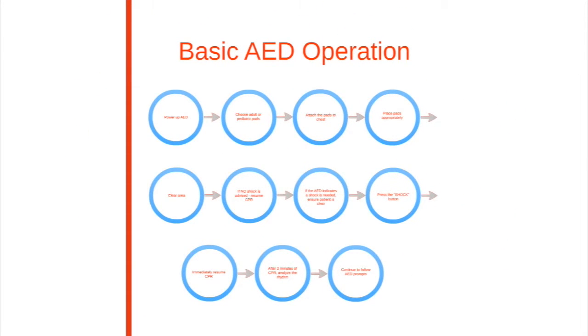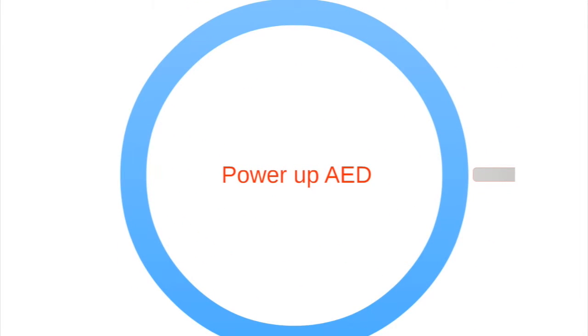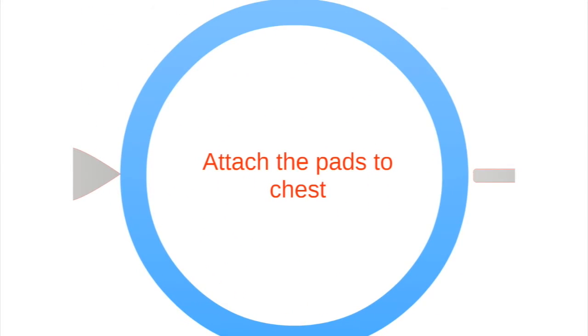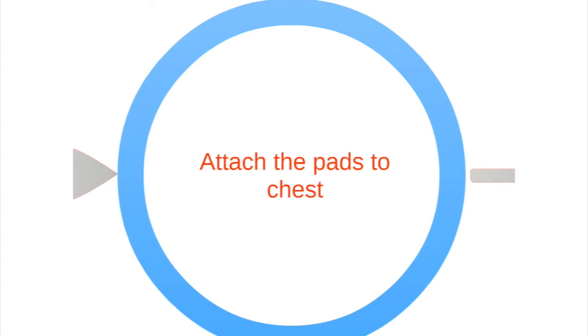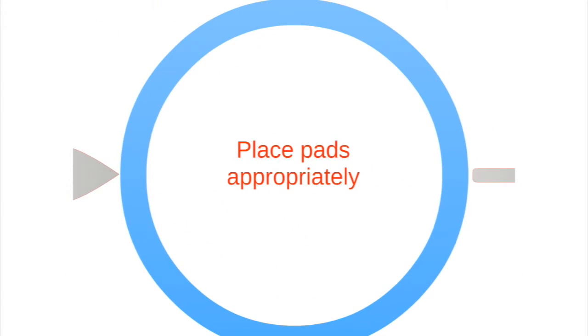Here is the basic AED operation. Power up the AED. Choose the appropriate pads. Attach the pads to the bare chest and make sure cables are connected. Place one pad on the upper right side and the other on the chest a few inches below the left arm.